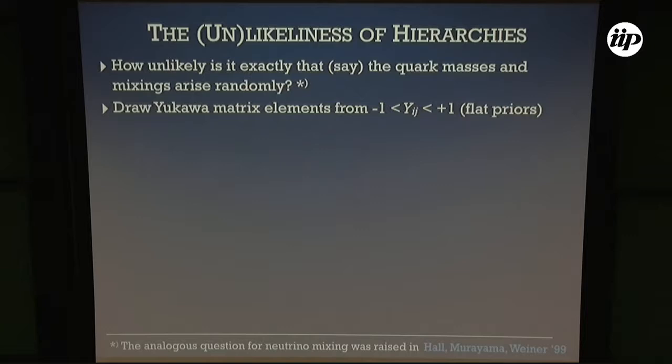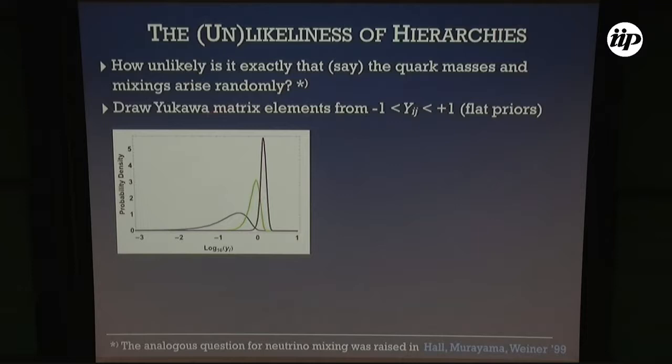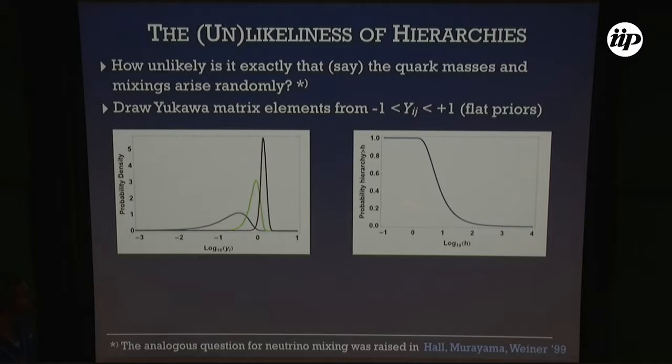Let's do a simple exercise: take Yukawa matrix elements from flat priors between minus one and one, using real Yukawas for simplicity. From numerical sampling you get three eigenvalues and their probability densities. There is some probability for a modest hierarchy — a bump for smaller eigenvalues around 0.3 — but getting really large hierarchies is quite unlikely.